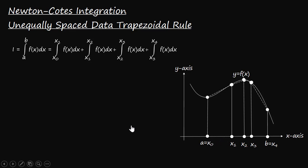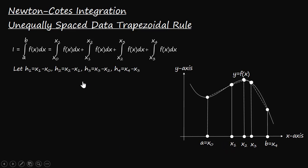Let's represent the length of the interval from x₀ to x₁ as h₁, the length from x₁ to x₂ as h₂, the length from x₂ to x₃ as h₃, and the length from x₃ to x₄ as h₄.